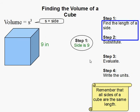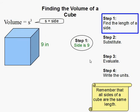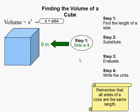How to find the volume of a cube. The first thing you have to do is find the length of just one of the sides, because for cubes all the sides are equal. In this problem we are given that the sides are of length 9 inches.